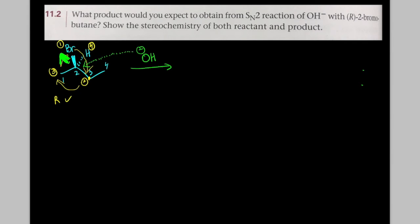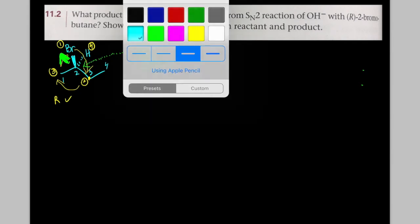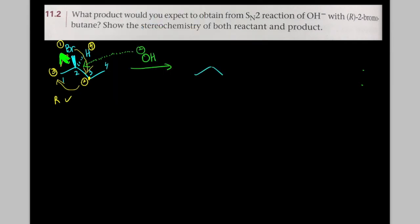And what we're going to get as a result of that is inversion of configuration at carbon 2. The hydroxide is going to be attached to this molecule from the back side. And the hydrogen in the process gets flipped around. Okay, it gets inverted like so. So that's going to be the S molecule. And of course, we have bromide, which is the leaving group there.